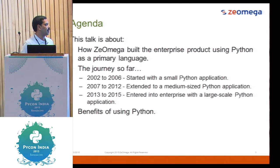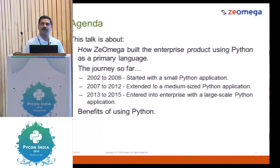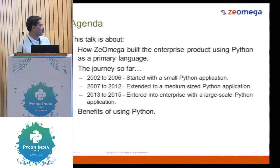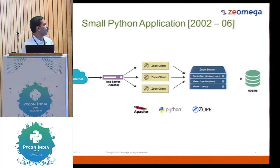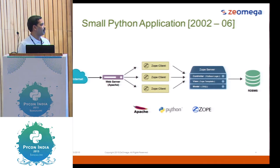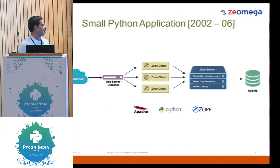From 2007 to 2012, we extended the same Python web application, adding load balancers and memcache, and we were able to serve mid-size business needs from 2002 to 2012. In that early phase, our web application used a server as controller, view, and model. We used Python logic in the controller and connected to an RDBMS on the back end, with Apache on the front end. This started in 2002 and served us until 2006.